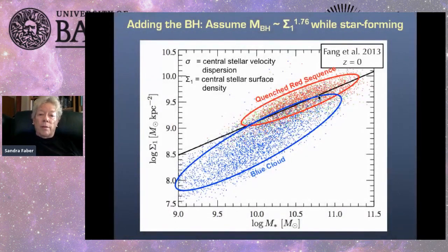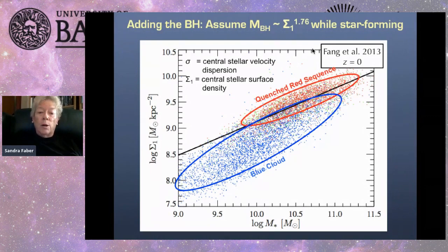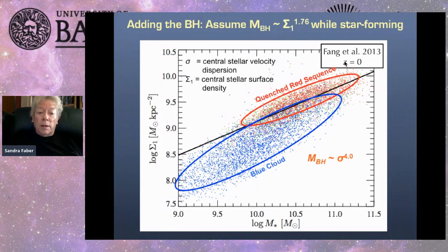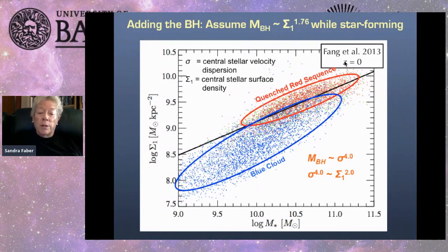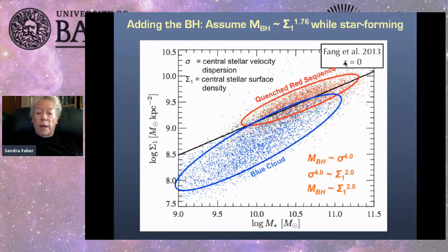Now adding the black hole. We assume that while galaxies are star-forming, their black hole mass obeys a relationship with central stellar density sigma-1 within one kiloparsec. Why would this be reasonable? We are aware of the nice relationship M_BH ∝ σ⁴. Observations show, and simple physics agrees, that velocity dispersion to the fourth is actually proportional to sigma-1 squared. Putting these two things together predicts that black hole mass goes as sigma-1 squared — the actual power we find is close to but not exactly 2.